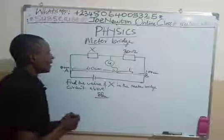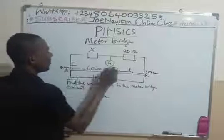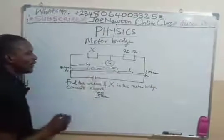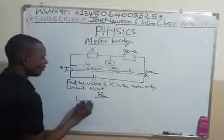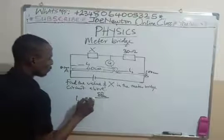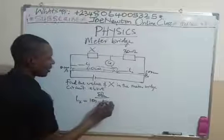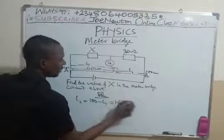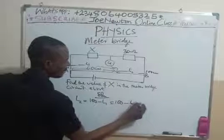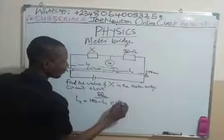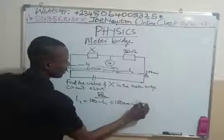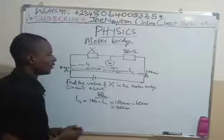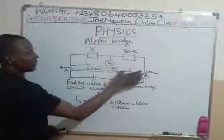So, in that order, we have that our L2 is equal to 100 minus L1, which is 100 minus 60 cm, giving us 40 cm. So, our L2 here is 40 cm.